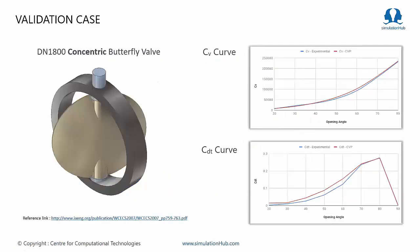To ensure accuracy, the app is well validated against experimental cases. One example shows a concentric butterfly valve where the CV and CDT curves are in close agreement with experimental data. We have performed seven to eight such validation cases and fine-tuned the app to bring results closer to experimental values. We also encourage users to validate the app against their own lab-tested values — we support such activities, so feel free to contact the support team.